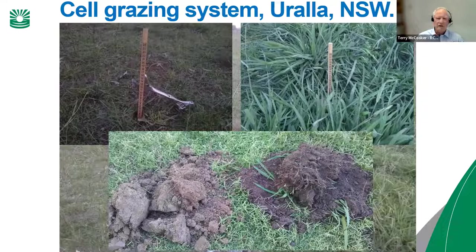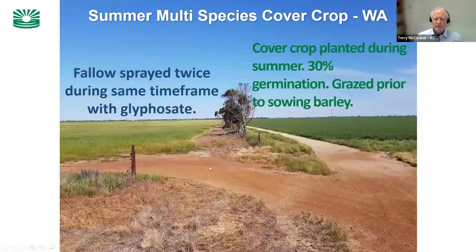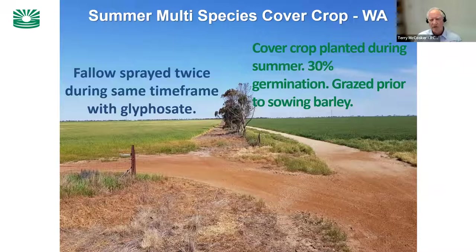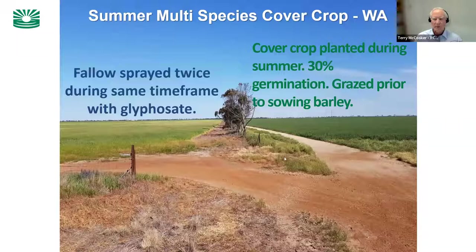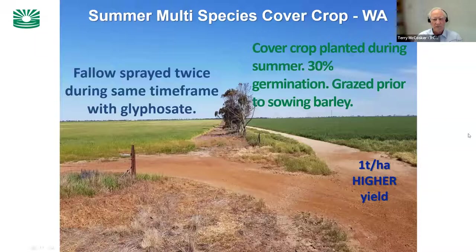Multi-species cover cropping is one of the tools available to us. Here's an example from near Williams. The right-hand paddock had a summer multi-species cover crop that pretty well failed — it germinated a bit, had one fairly light graze with sheep. The left-hand paddock on the same property was sprayed twice with glyphosate. After harvest, the paddock on the right — after what was basically a failed multi-species cover crop — had a one ton higher yield per hectare. Just that little bit of extra biodiversity significantly changed that ecosystem.